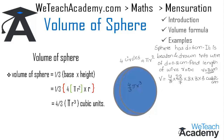Since the wire is in the form of a cylinder, we use the formula for the volume of a cylinder: V = πr²h. Substituting the value of r, we get 22/7 into 0.1 × 0.1 into the height, which we write as l. Since the sphere is beaten and drawn into the wire, the volume of the sphere equals the volume of the wire.